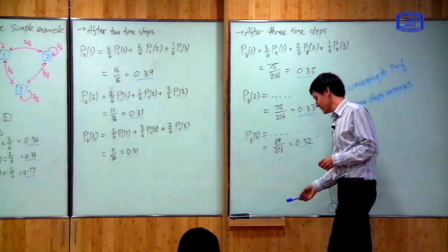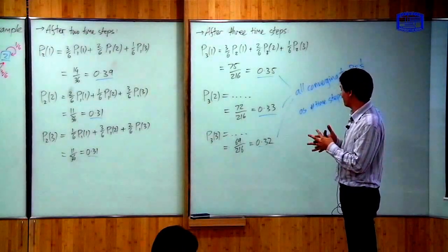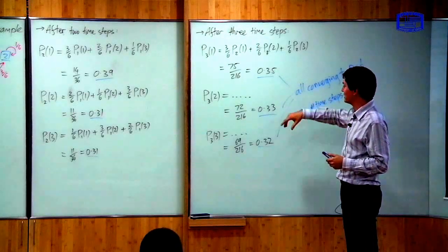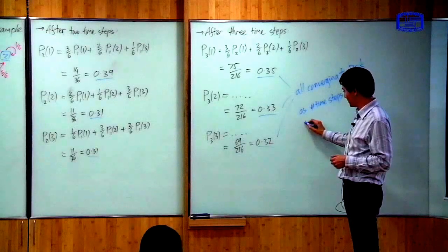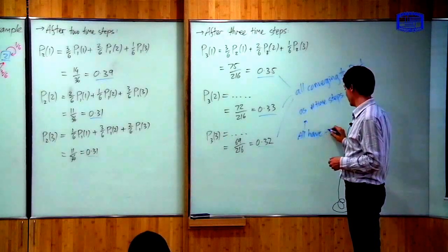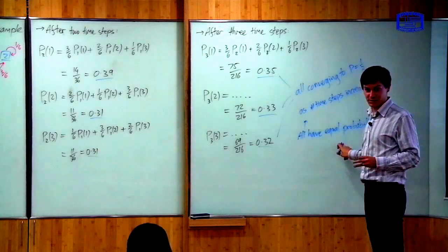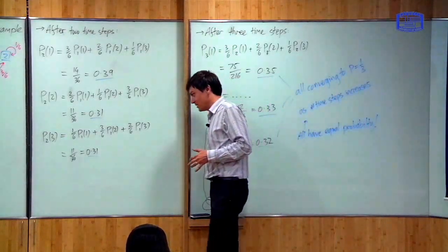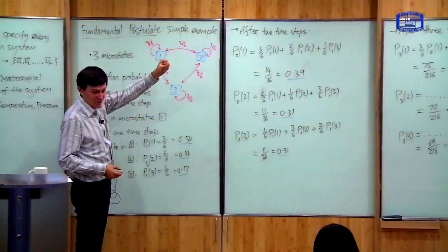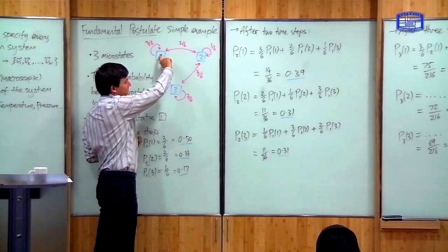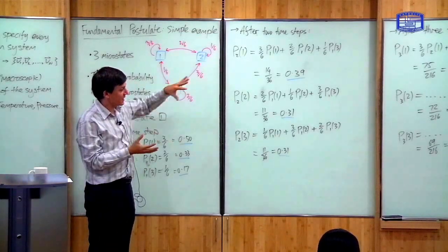This is the point of the fundamental postulate. If the number of time steps is large — if the number of collisions which happen within my measuring interval is large — then when I sample the system and find the microstate, it has equal probability of being in any microstate. So they all have equal probabilities. This is exactly the statement of the fundamental postulate: the probability of each microstate should be equal. The important properties of the model system are: first, you need a large number of time steps to get equal probability; second, the probability of going from one to two is the same as the probability of going from two to one — it has this reversibility.